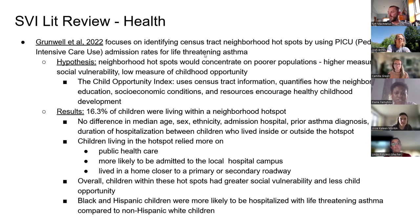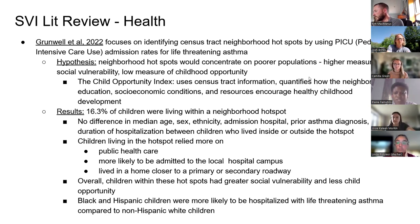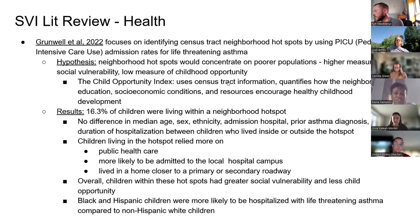I'm going to talk about the literature reviews. I tried to divide them into health, environmental justice, and air quality, but there's a lot of overlap. This first study focuses on identifying census tract neighborhood hotspots using the PICU — pediatric intensive care use — admission rates for life-threatening asthma. The hypothesis was that neighborhood hotspots would concentrate on poorer populations, with higher social vulnerability and lower childhood opportunity. The childhood opportunity index uses census tract information and quantifies neighborhood education, socioeconomic conditions, and resources which encourage healthy childhood development.